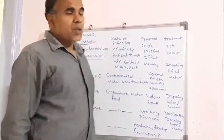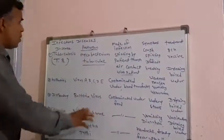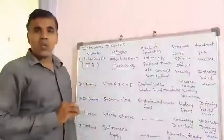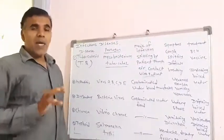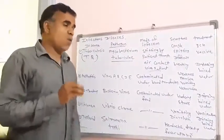So these are the five infectious diseases we studied in this period. In the next period, we will start some diseases spread through animals or insects, and also non-infectious diseases.